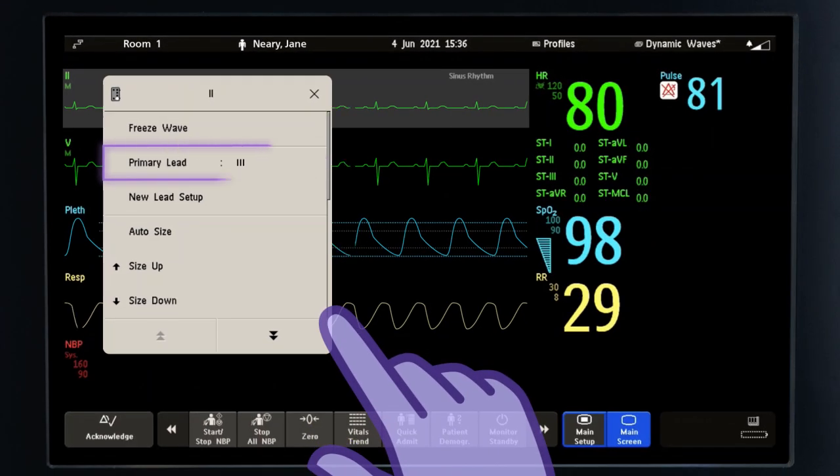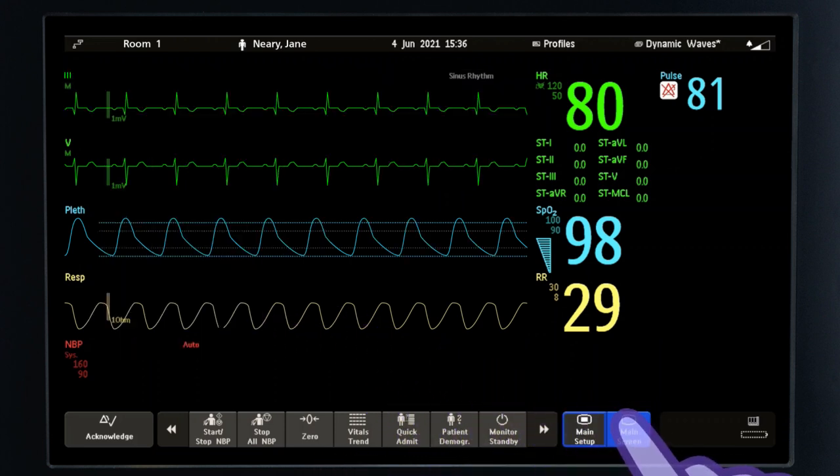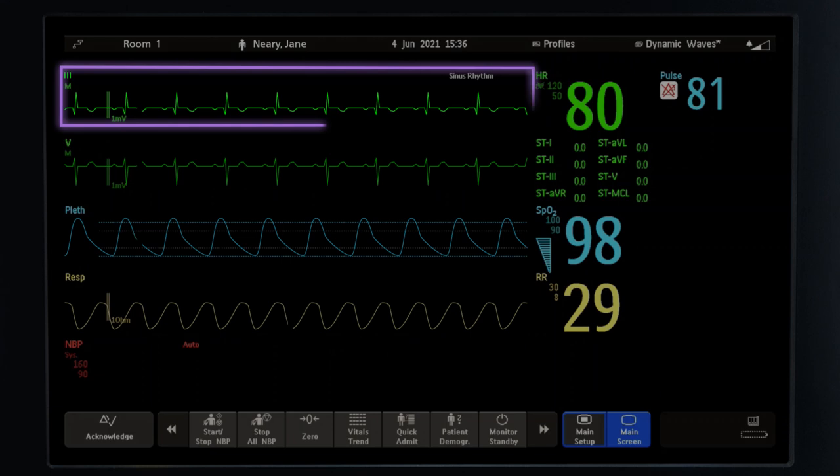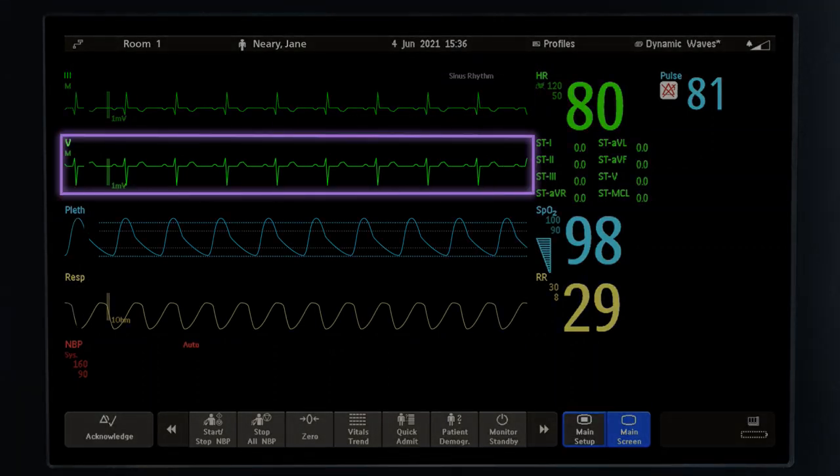Once you've changed the lead, select main screen to close any open menus so you can review your change. Notice that the primary lead has been switched from lead 2 to lead 3, which shows a much better QRS morphology. You can change the secondary lead by following the same process.